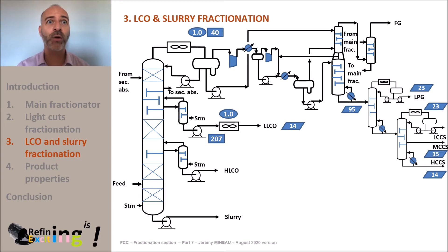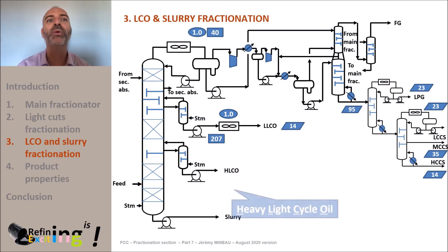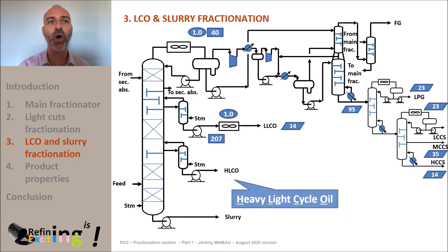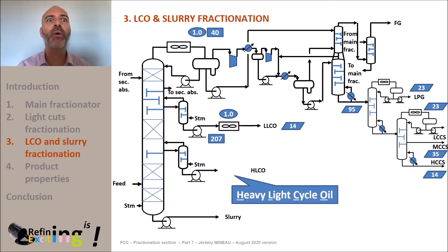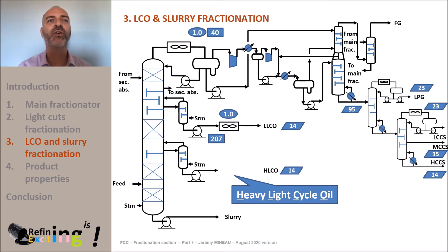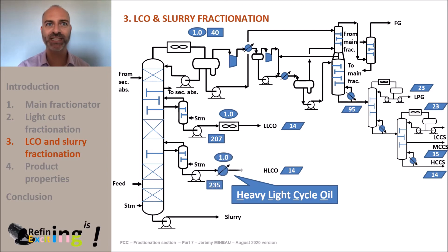Lower in the tower, we will produce a HLCO cut, which is called heavy light cycle oil, or the heavy part of the LCO. This stream flow rate will also be around 14 tons per hour. The same remark applies regarding the installation of a side stripper. This stream is cooled down from 235 degrees C to ambient temperature with the help of several heat exchangers as well.